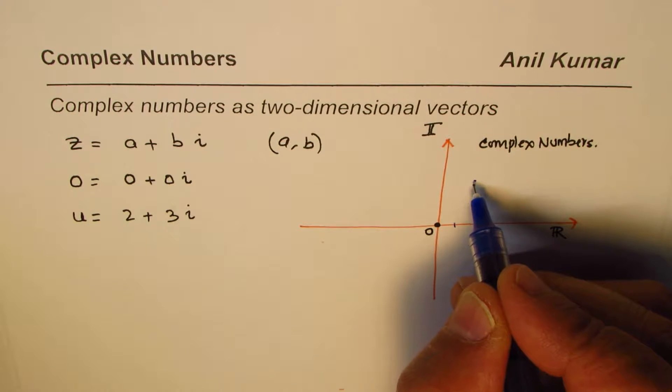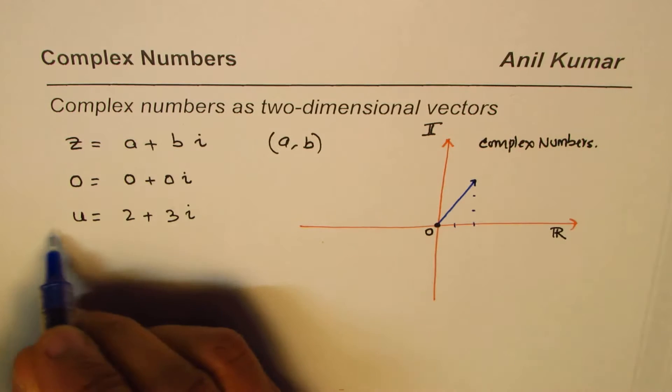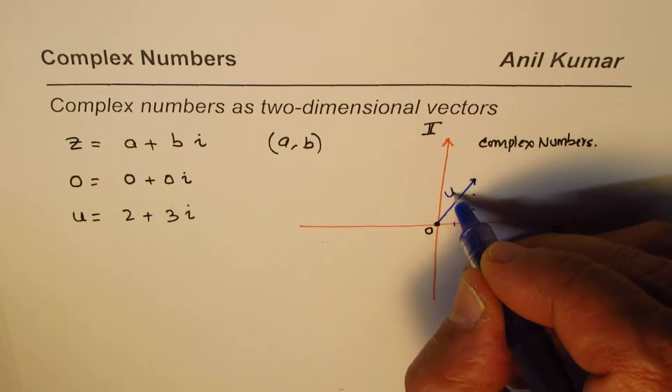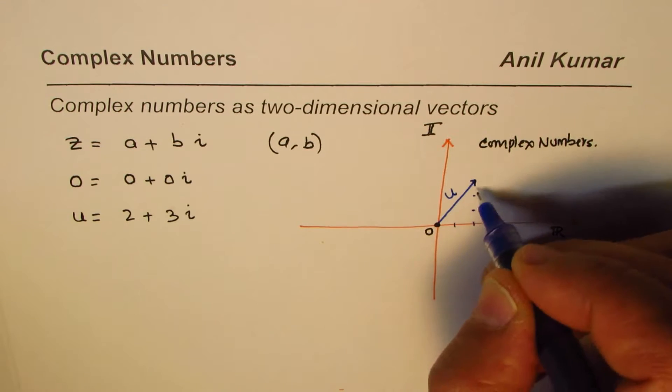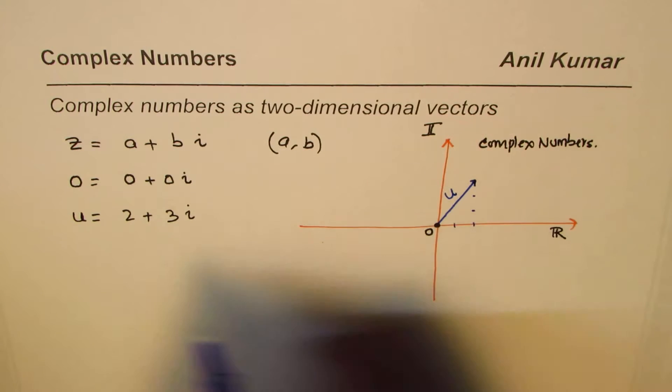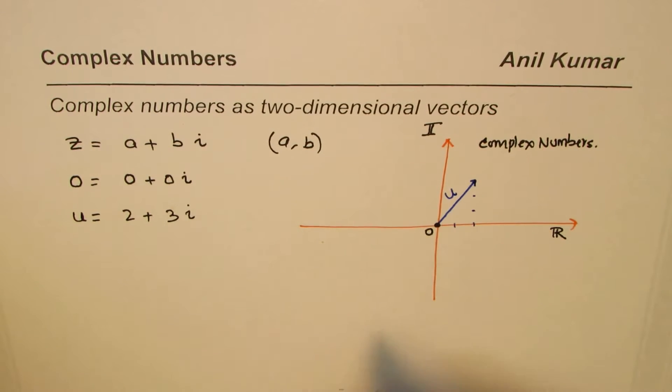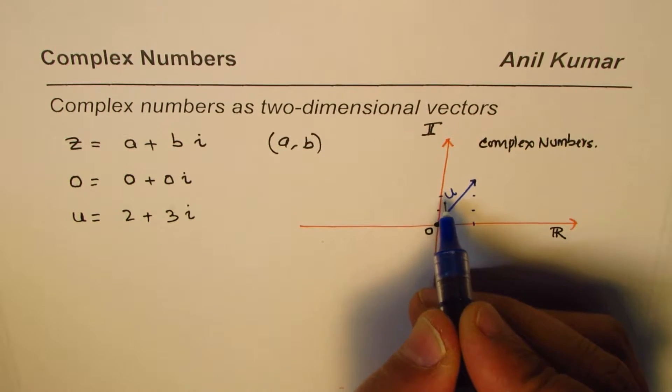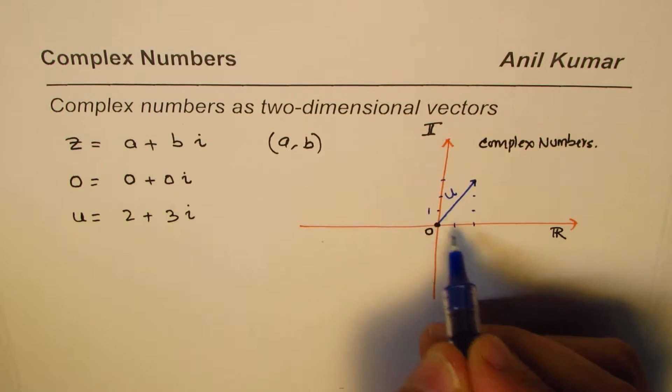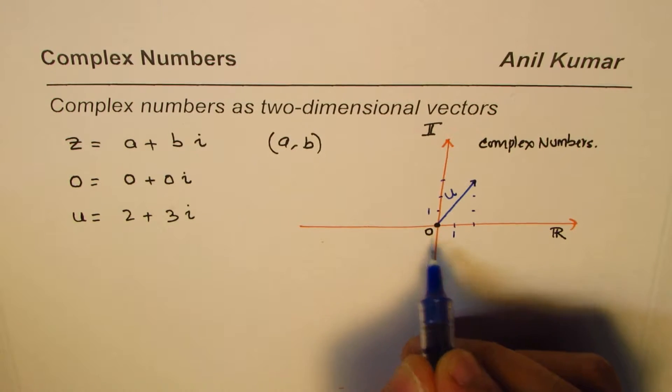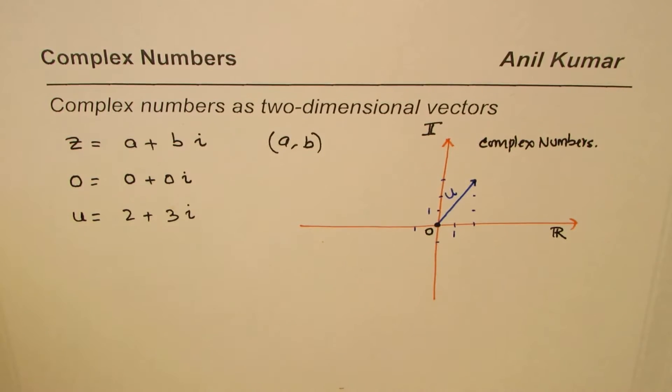Let's say this is our scale. So this, when I join this line, that becomes u. So this becomes the vector u on the complex plane. So 2 plus 3i could be represented as shown here. So these are the units now. So this is one, this is one. So that is how you could represent.